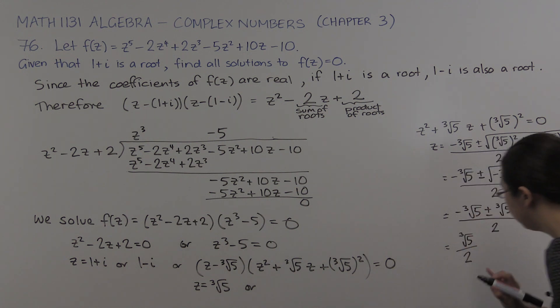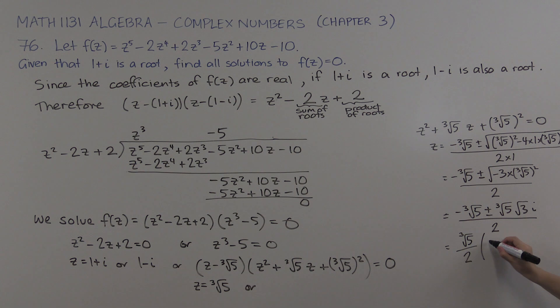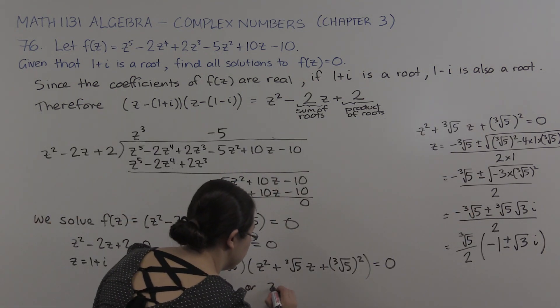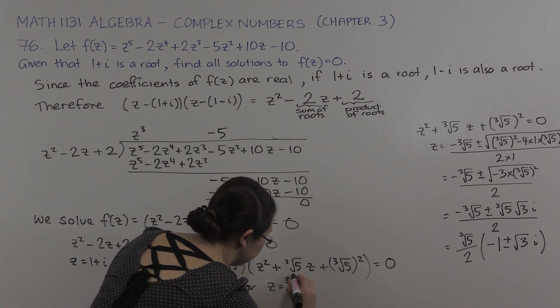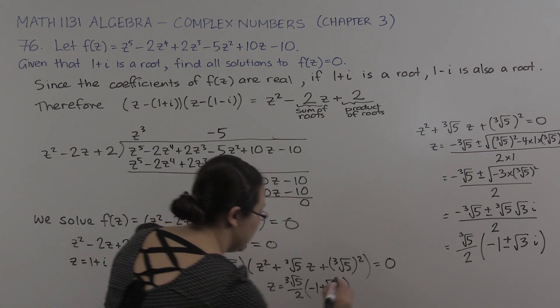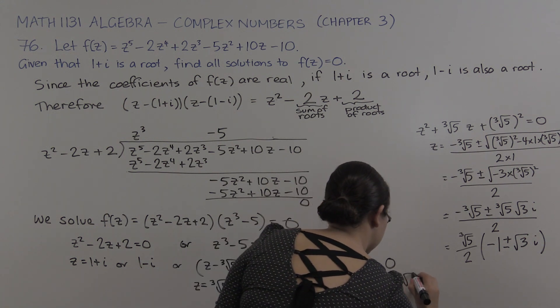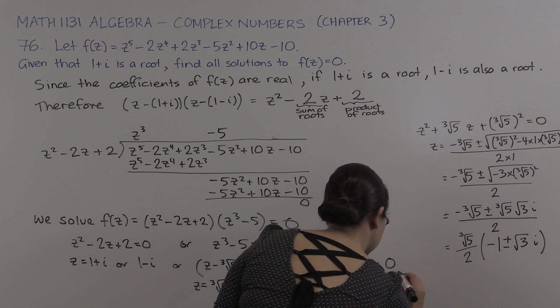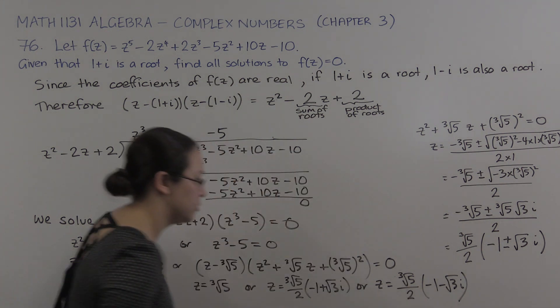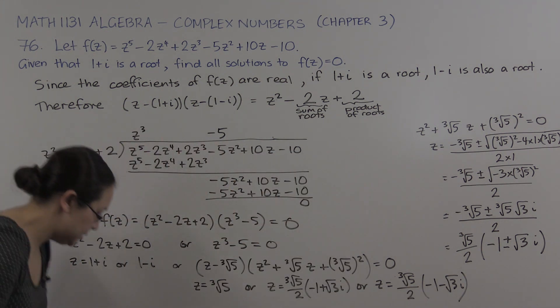And we can factorize the cube root of 5 out and we can write it all over 2. So the cube root of 5 over 2, and then we would be left with minus 1 plus minus square root of 3i. Okay, so there's the solution to our quadratic. So let's just put them all in a row here. So we have these two answers, we have the cube root of 5, we have two more here. One is the cube root of 5 over 2 times minus 1 plus root 3i. And the other is the cube root of 5 over 2 times minus 1 minus root 3i. So there are our five answers all together.